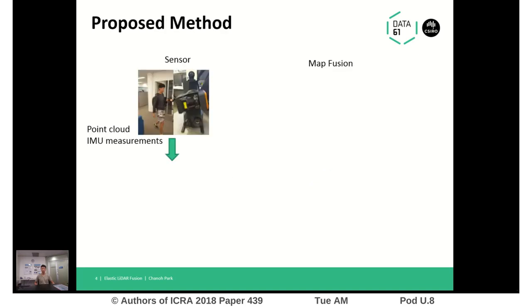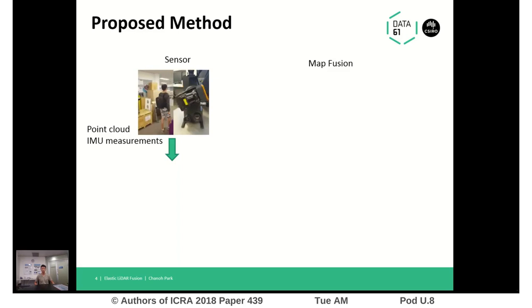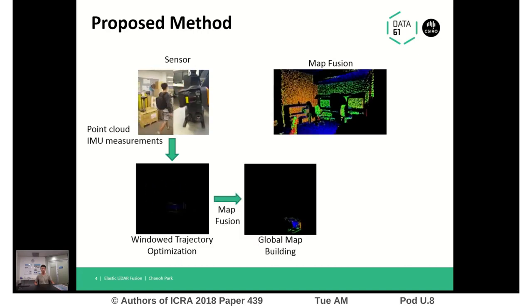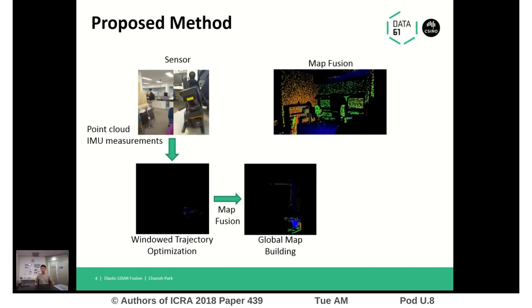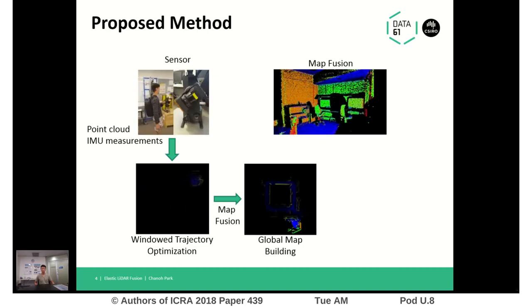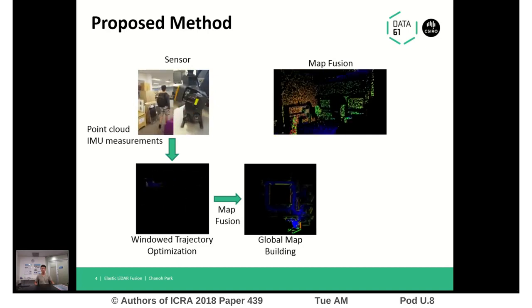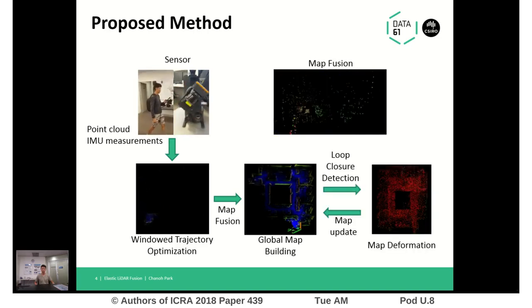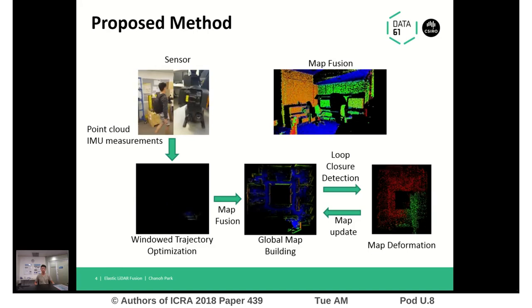Our solution to this problem is simple. First, we take point cloud and IMU measurements as input and generate a local map by windowed continuous time trajectory optimization. The local maps are then fused into a global map. To reduce spatial redundancy and take advantage of multiple spatial observations, we utilize probabilistic voxel fusion. Then, right after loop closure detection, we close the loop by deforming the map itself.